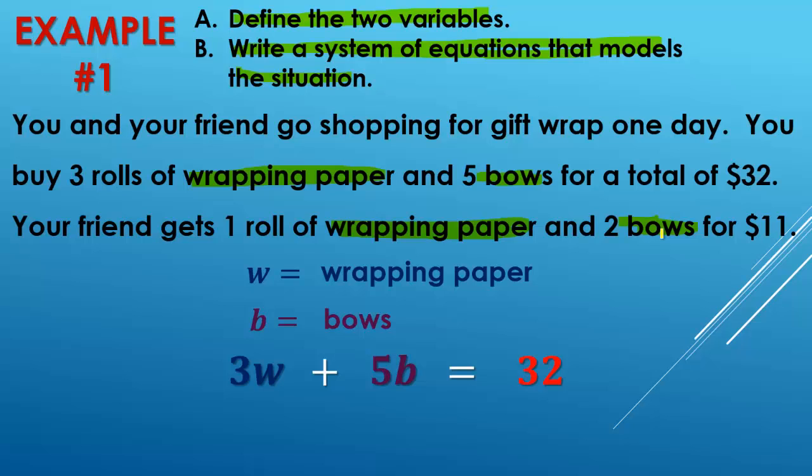Okay. So for the second one, so that was the equation for us. Now we're going to write the equation for our friend. So he or she only bought one roll of wrapping paper. So we could say 1w or just w because remember, you don't have to write a 1 if it's the coefficient. And then two bows. So that would be 2b. And then the total spent was $11, so it would just be equal to 11. That's it. This is A right here, defining what they are. And this is B, writing the system. Simple enough. Let's try another example.